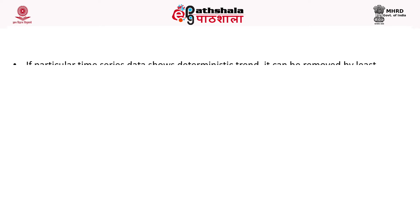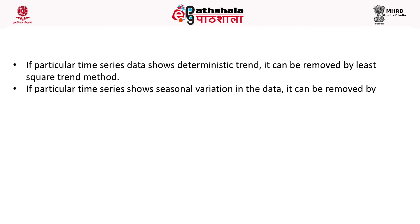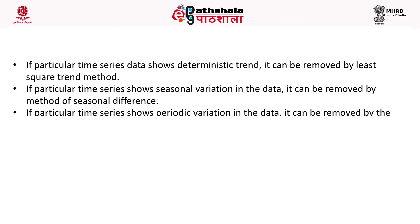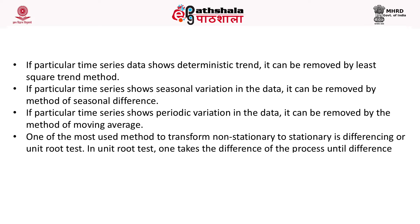If a particular time series shows a deterministic trend, it can be removed by the least trend method. If it shows seasonal variation, it can be removed by the method of seasonal differencing. If it shows periodic variation, it can be removed by the method of moving average. One of the most used methods to transform a non-stationary series to stationary is differencing or the unit root test, where one takes the difference of the process until the differenced process becomes stationary.